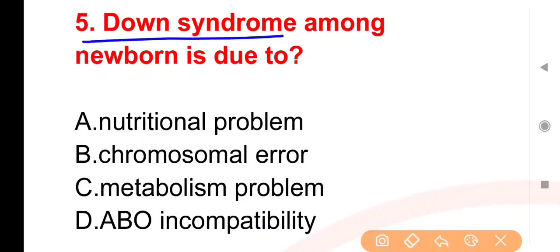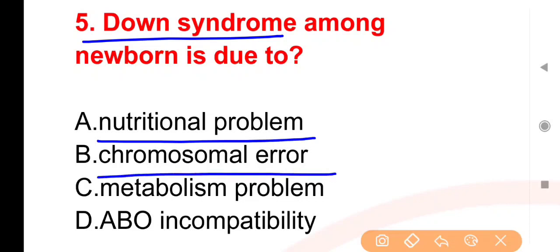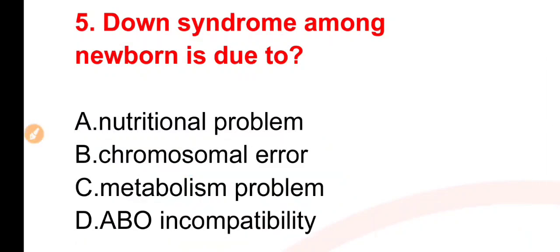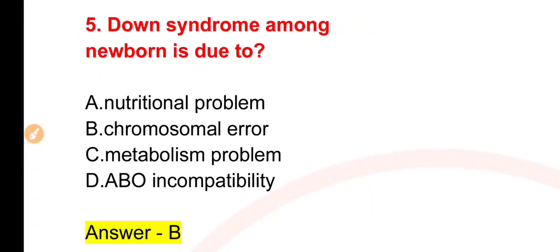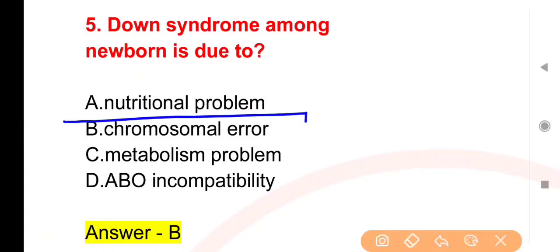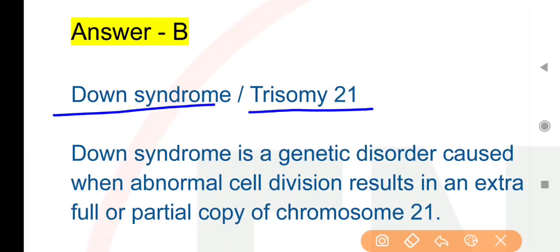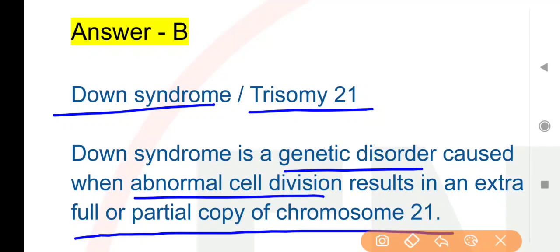Next question: Down syndrome among newborn is due to — Down syndrome ka karan aapko select karna hai. Options: Nutritional problem, Chromosomal error. The right answer is chromosomal error. Down syndrome ko aap Trisomy 21 ke naam se bhi jaante hain. Yeh genetic disorder hai, caused by abnormal cell division resulting in an extra full or partial copy of chromosome 21.